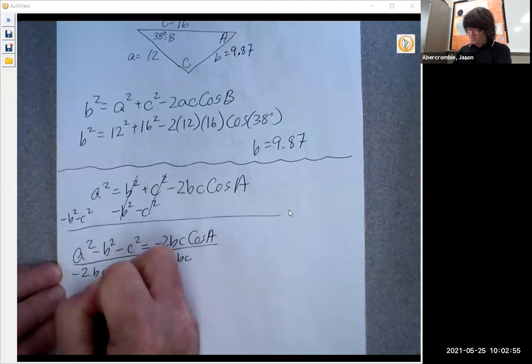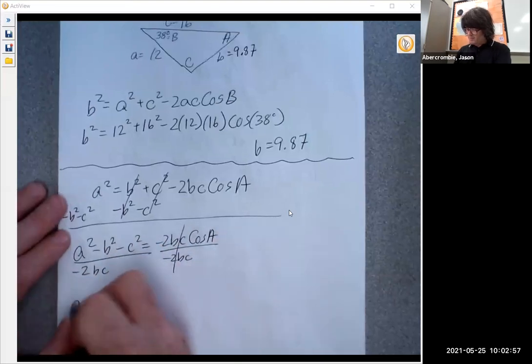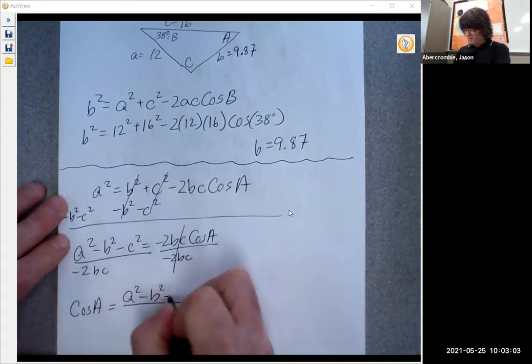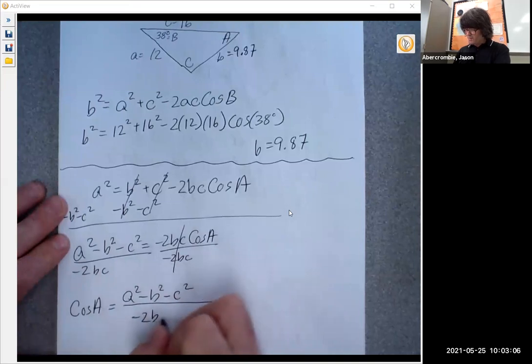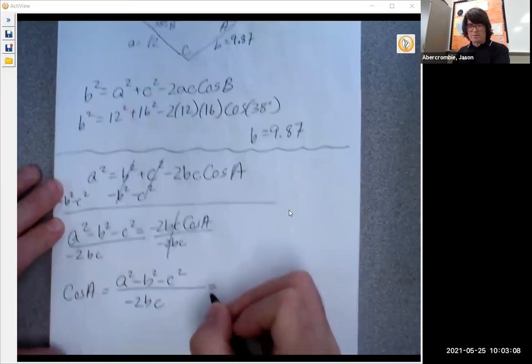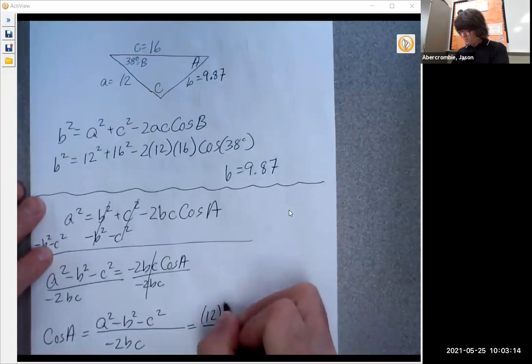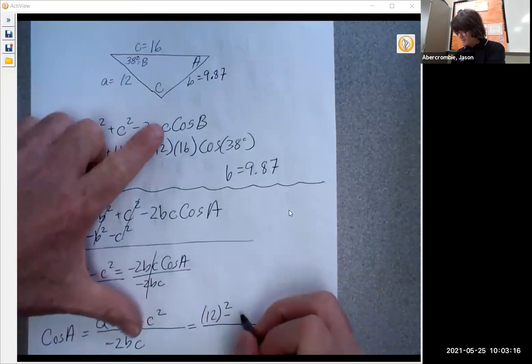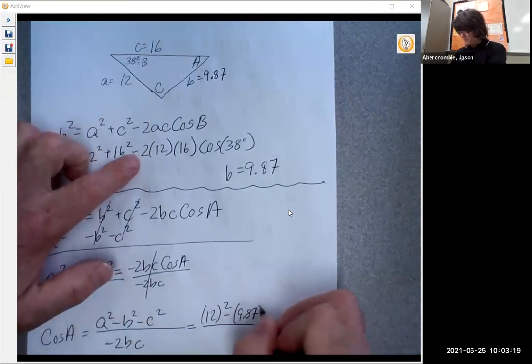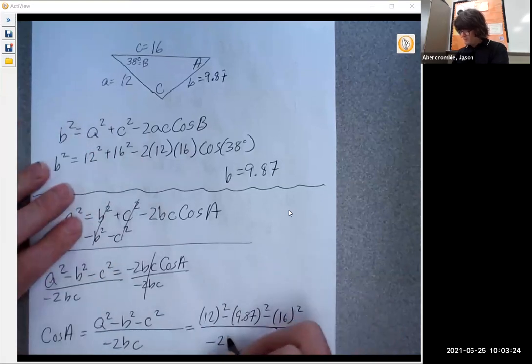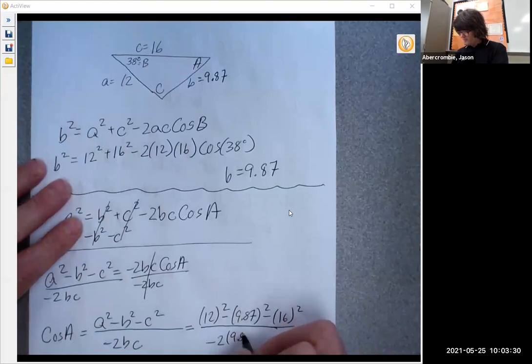You can put the numbers in first if you want, but I think it's a little easier just to deal with the, without a bunch of numbers here. A squared minus B squared minus C squared over 2BC. Now we're going to put numbers in. A is 12. So 12 squared, B is 9.87 squared, C is 16 squared, and then minus 2 times B, which was 9.87 times C, which was 16.